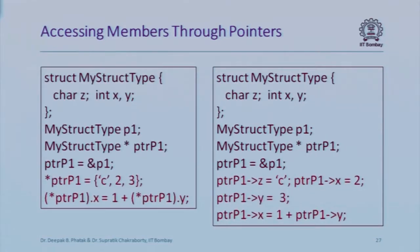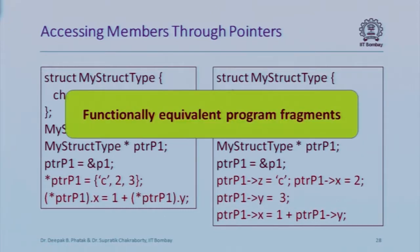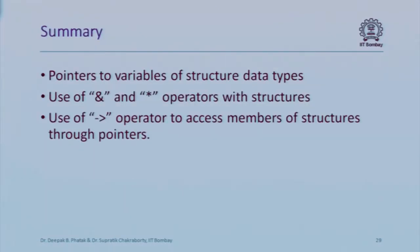Here are some examples: I could initialize star pointer_p1 with the whole object directly, or I could say pointer_p1 arrow z = 'c', pointer_p1 arrow x = 2, pointer_p1 arrow y = 3. Similarly, I could write pointer_p1 arrow x = 1 + pointer_p1 arrow y. These two approaches are completely functionally equivalent.